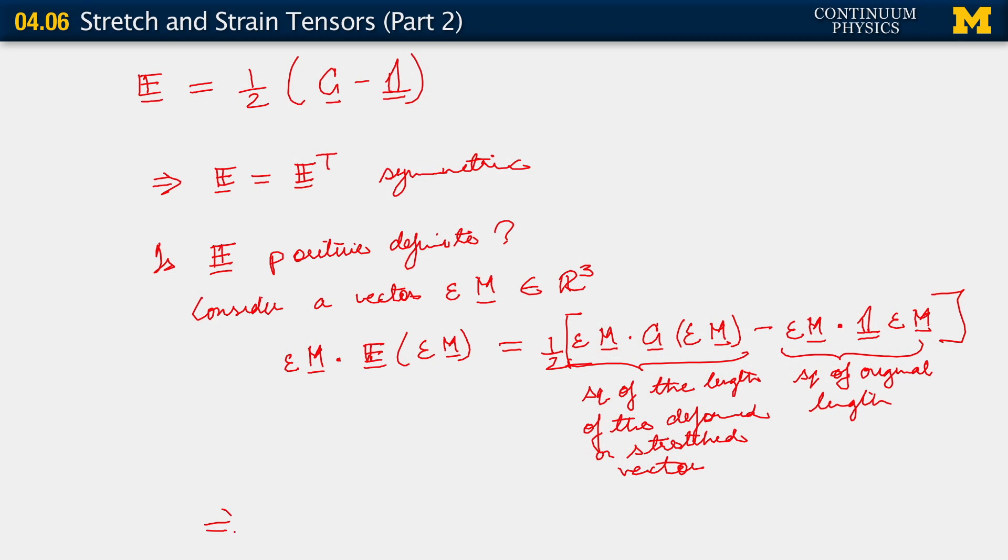As a result, it implies that this product that we started considering, this thing can be less than 0. As a consequence, E is not necessarily positive definite. E is not positive definite.